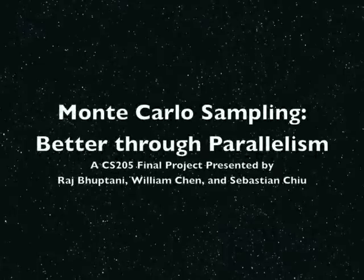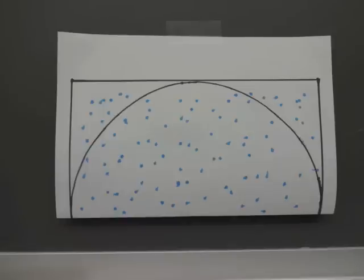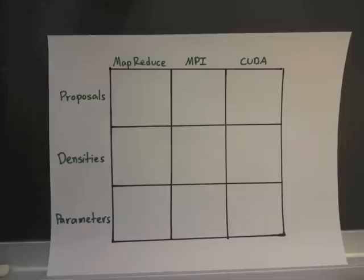This project parallelizes Monte Carlo methods. A Monte Carlo method randomly samples to better understand a distribution of interest. Remember in problem set 1 how we estimate pi by throwing darts on a square? Our project is harder.